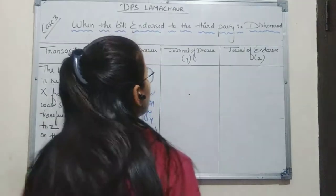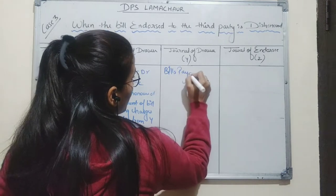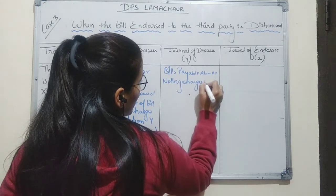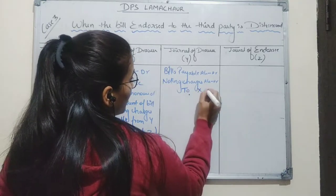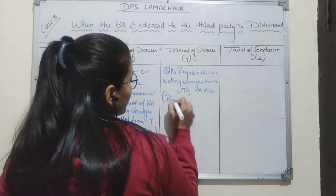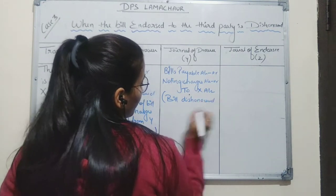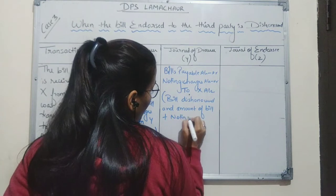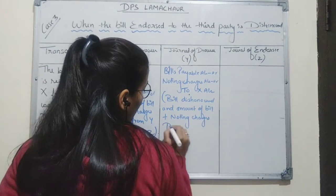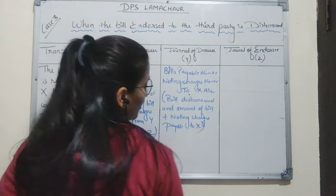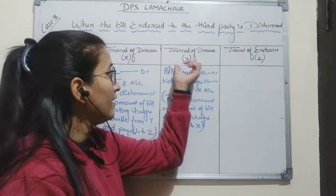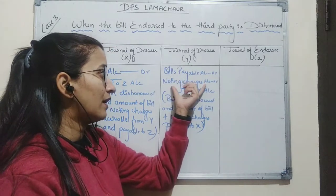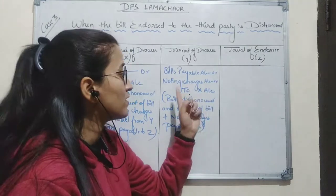The next entry in the books of Y will be: bills payable account debit, noting charges account debit, to X account. The narration for this entry will be: bill dishonored and amount of bill plus noting charges payable to X. For Y, X is the drawer, so Y will pay the amount of bill and noting charges to X. That is why bills payable is debited, noting charges is debited as it is an expense, and X account is credited.